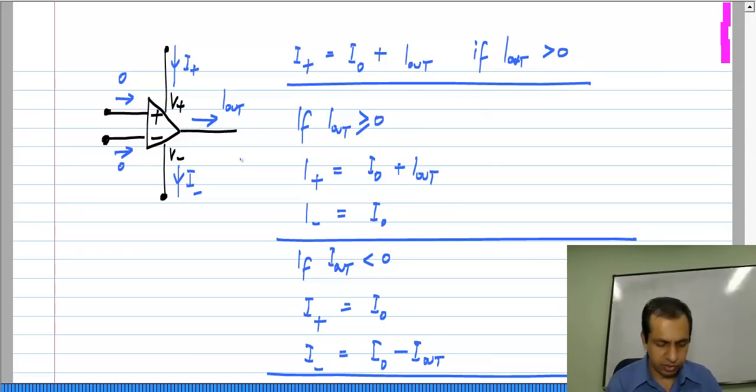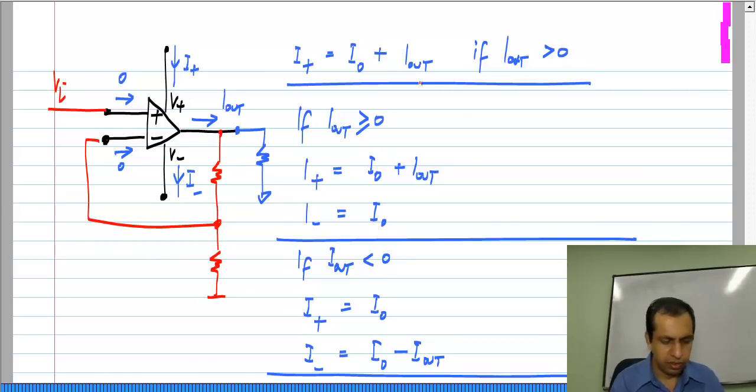For instance, let us make an amplifier out of this. I will not work out the precise details. Let us say that the input is a sinusoid; the output voltage here also will be a sinusoid.